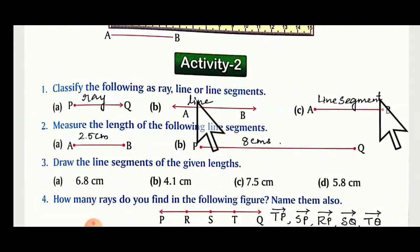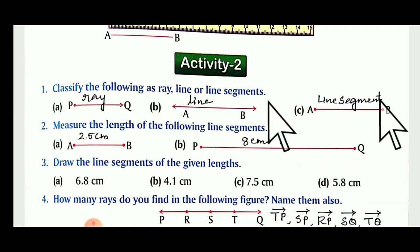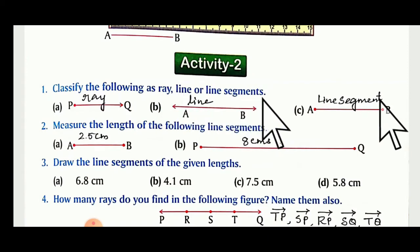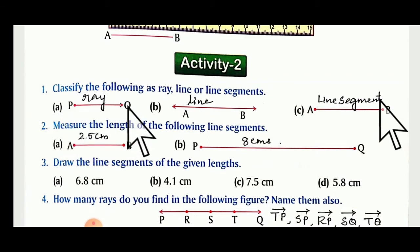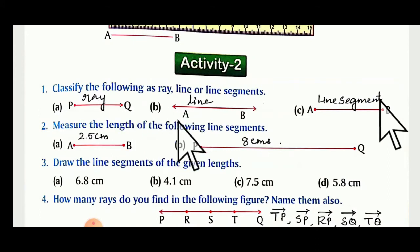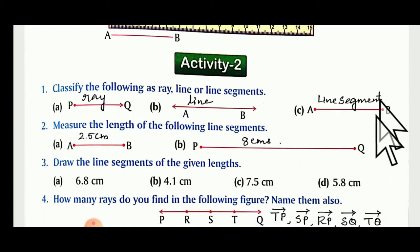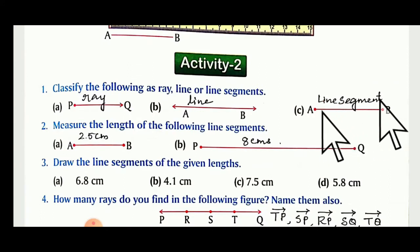Activity 2: classify the following as ray, line, or line segment. First — P and Q with a dot and an arrow: that is a ray. Second — a single line with arrows on both sides: that is a line. Third — dot to dot with a line joined: that is a line segment, because we can measure its length.